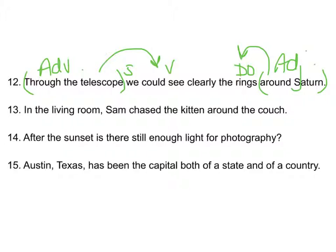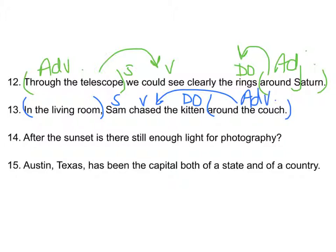'In the living room, Sam chased the kitten around the couch.' 'Chased' is your verb; Sam chased who? The kitten. 'Around the couch' modifies 'chased': adverbial. 'In the living room' also modifies the verb 'chased,' so they are both adverbial phrases modifying the verb of this sentence.